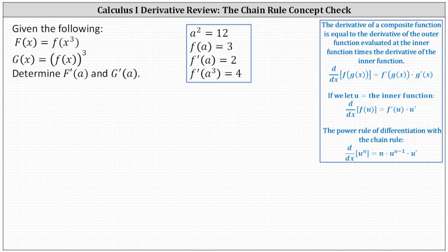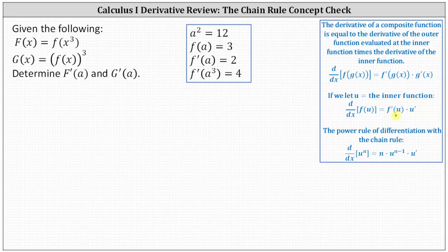Looking at our notes on the right for review: the derivative of f(g(x)) is equal to f'(g(x)) times g'(x). The derivative of a composite function equals the derivative of the outer function evaluated at the inner function, times the derivative of the inner function. If this notation is confusing, it's often helpful to let the inner function equal u. So if we let g(x) = u, the derivative of f(u) with respect to x equals f'(u) times u', where f'(u) is the derivative of the outer function evaluated at the inner function, and u' is the derivative of the inner function.